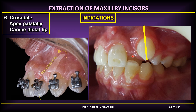If a lateral incisor is crowded in lingual occlusion — crossbite — with its apex palatally displaced, and the canine is erupting in a forward position and is upright or distally inclined, the lateral incisor may be extracted in this case because retracting the canine further back with its distal inclination is going to be difficult, and the apical position of the root is going to be very difficult to correct.